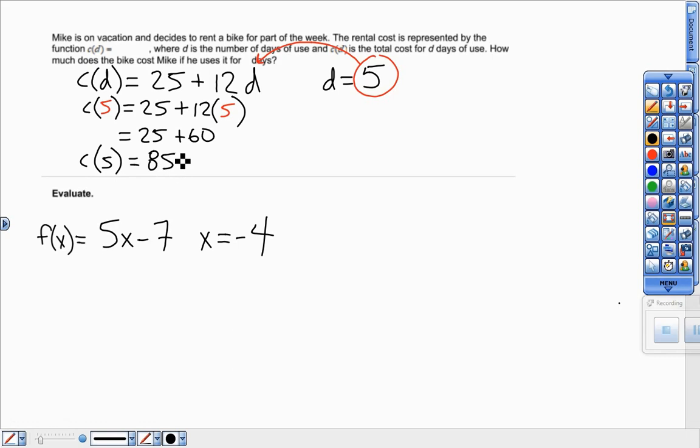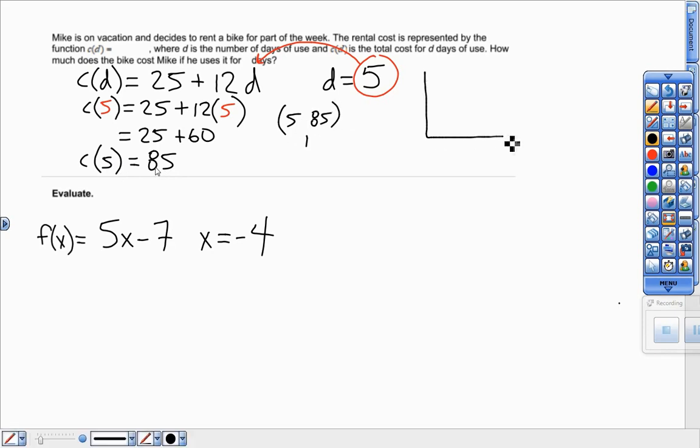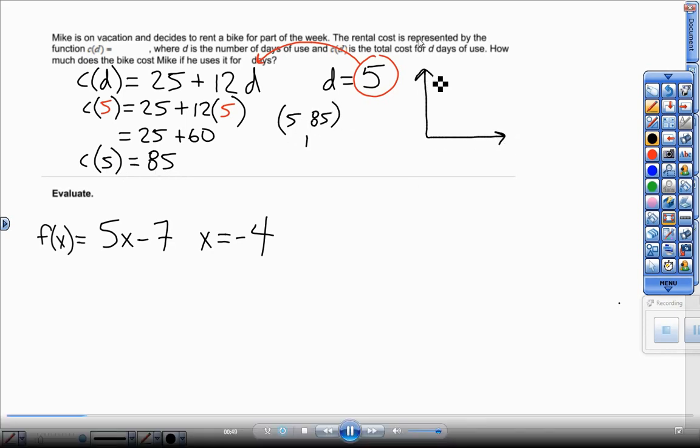And again, I want you to realize this is a point. This is a coordinate 5 for X, 85 technically for Y. If I was to graph it, this Y-axis would be like the D-axis. I'm sorry, I had that wrong. That would be the C. And this would be the D-axis right here. If I graph that, that would be 25 for my Y-intercept and then 12 for my slope over 1, up 12, over 1, up 12.